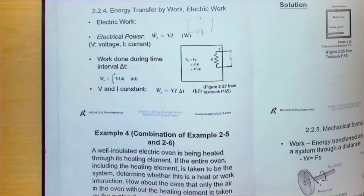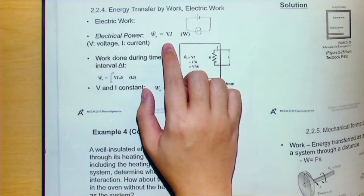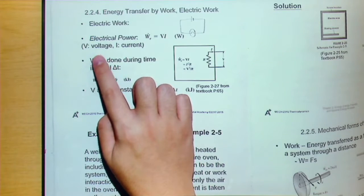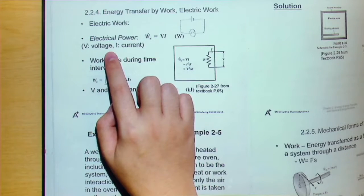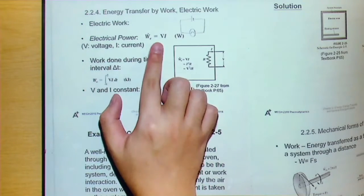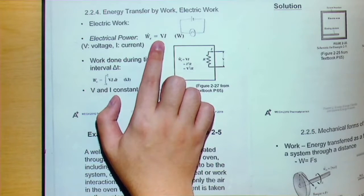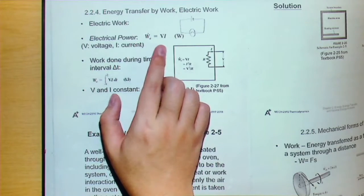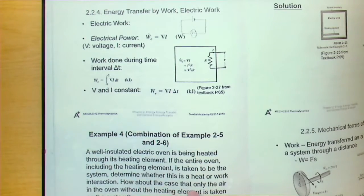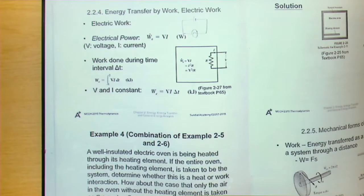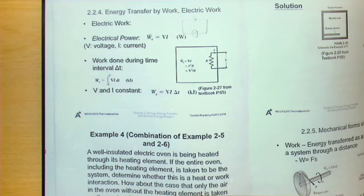Electrical work is usually expressed in rate form, meaning in terms of electrical power. It is given by Ẇ_e = V times I, where V is voltage and I is current. Note that the bold-face letter V here represents voltage, not volume — the context makes this clear, and the subscript e denotes electrical power.